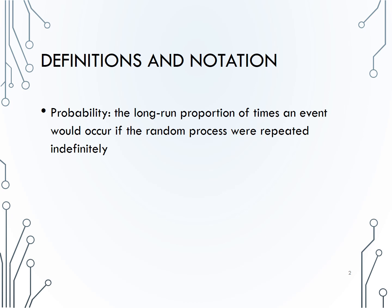Probability is defined as a long-run proportion of times an event would occur if a random process were repeated indefinitely. An event is something we are interested in, not unlike a variable. A random process could be something like flipping a coin, rolling a die, picking an envelope, driving to work, or selecting a student.